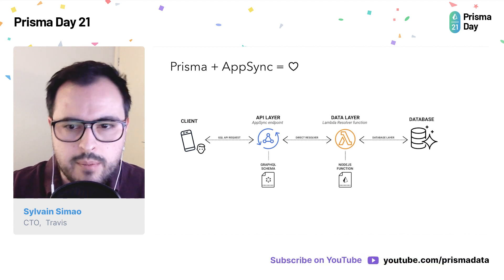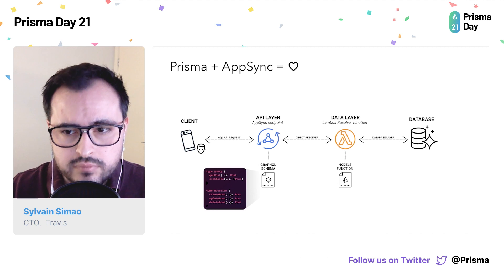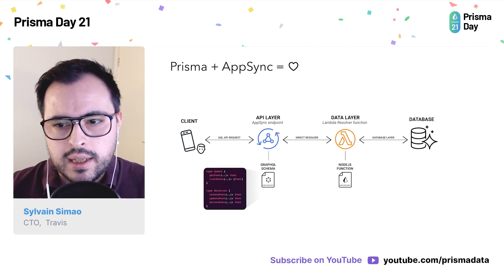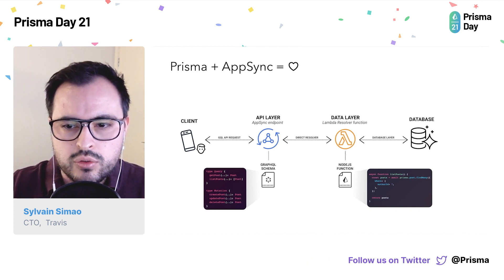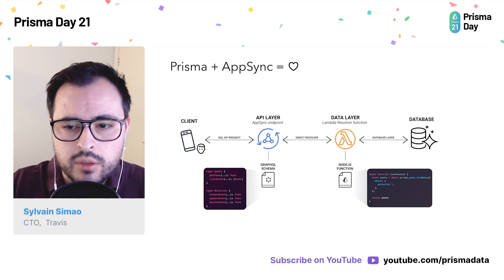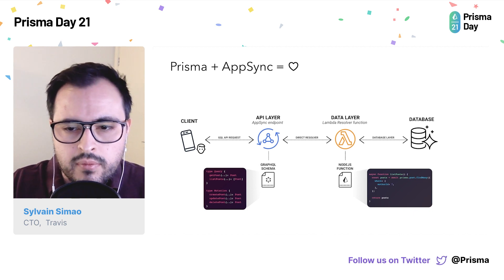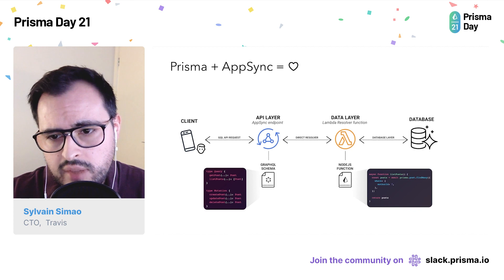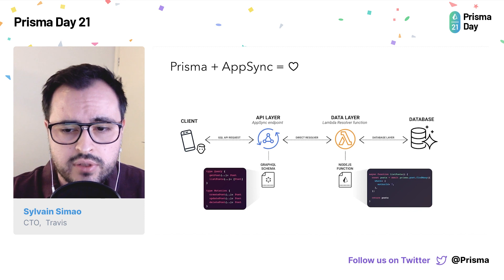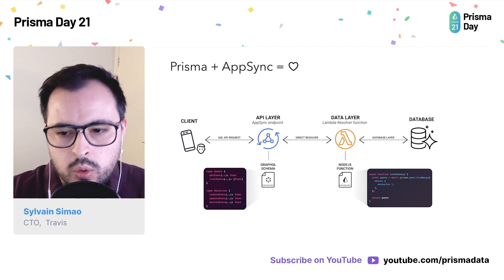Now let's see how to combine Prisma with AppSync. Assuming we already have a Prisma schema ready, the steps required will be: creating a GraphQL schema matching our Prisma schema — so for example, if we have a post model, we want to create queries and mutations around posts. Then we need to write our code for the Lambda function, where we'll use Prisma clients to interact with the database. We could do that manually, but all APIs usually require the same common set of operations: get, list, create, update, delete, etc. Writing the business logic for these operations plus creating our GraphQL schema is very time consuming and repetitive. So if you're wondering if we can do better — yes, we can.